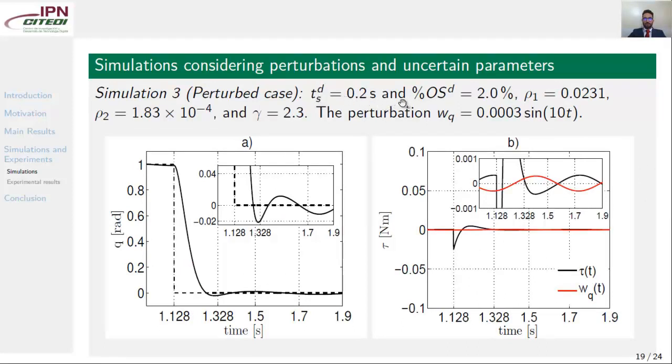We perform a third simulation with a settling time of 0.2 seconds and percent overshoot 2.0. Applying our method, you will get rho1, rho2, and gamma. In this case, we have a perturbation present in the system. Figure A shows the step time response. Here we have the settling time was indeed 0.2 and the percent overshoot was indeed 2 percent. The control input is shown in figure B. In the zooming area, we can see how the control input attenuates the effects of the disturbance.